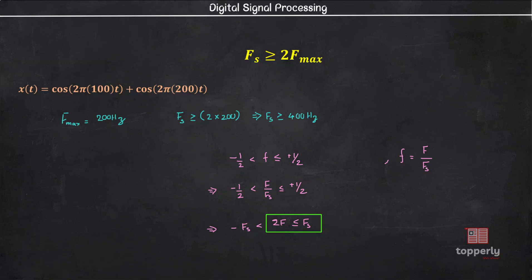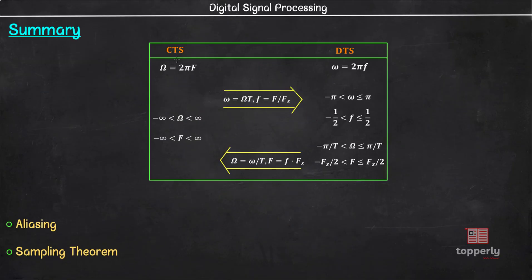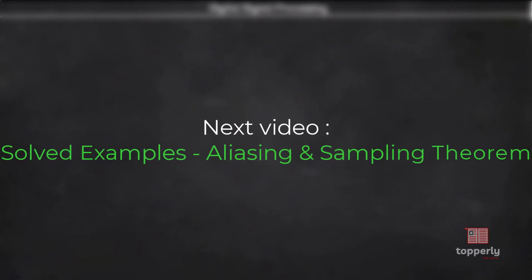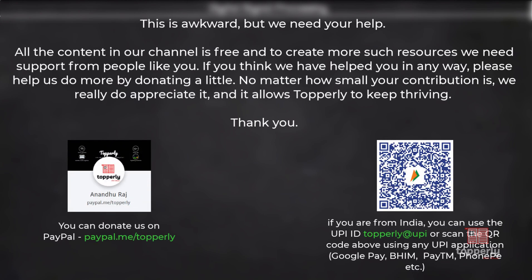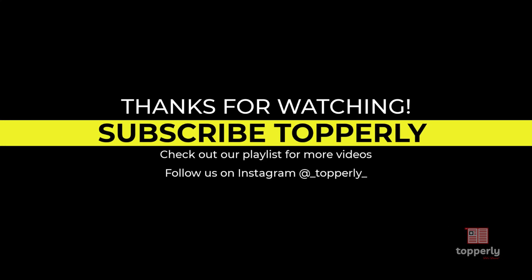That's all for this lecture. To summarize, we learned the relationship between continuous time signals and discrete time signals and the range of frequencies possible for each of them. We also studied the aliasing effect and the sampling theorem. In the next video, we will see some solved examples related to this topic. I hope that all the concepts taught in this lecture are clear to you. If you have any doubts, feel free to ask them in the comments — either we or some other viewer will surely help you. Also, if you found this lecture useful, please like the video and support us by subscribing to the channel. Thank you for watching and have a great day!